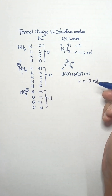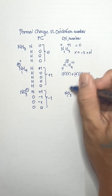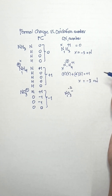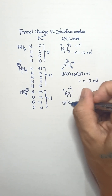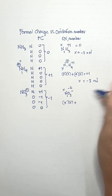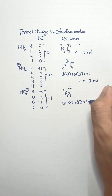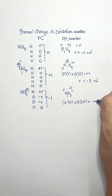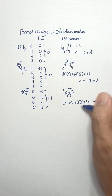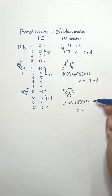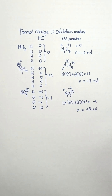For nitrate ion, the overall charge is negative 1. Nitrogen is one atom, so 1 times x. Oxygen has an oxidation number of negative 2, so the equation is: x times 1 plus 3 times negative 2 equals negative 1. The value of x must be positive 5, and that is the oxidation number of nitrogen in nitrate ion.